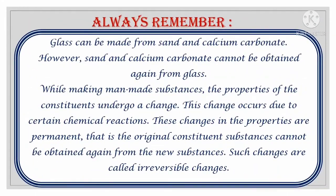Always remember: glass can be made from sand and calcium carbonate. However, sand and calcium carbonate cannot be obtained again from glass. While making man-made substances, the properties of the constituents undergo a change due to certain chemical reactions. These changes in properties are permanent — the original constituent substances cannot be obtained again from the new substances. Such changes are called irreversible changes.